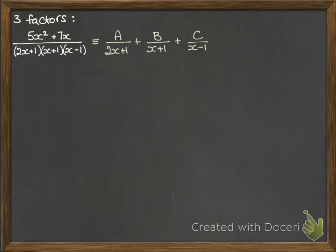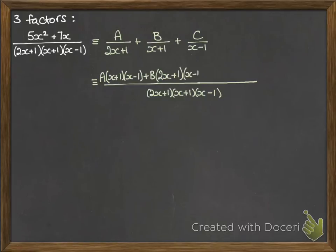Now if we wanted to combine them into a common denominator this is what it would look like. So we'd have our common denominator times in those three things together. And then A would have to be multiplied by the two denominators of the other fractions, B by the two denominators of the other fractions and so on.